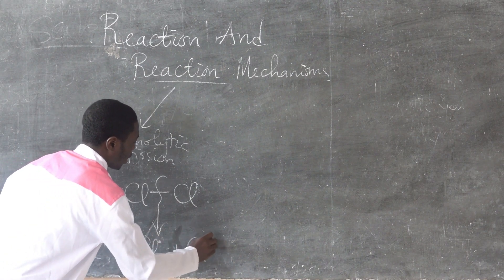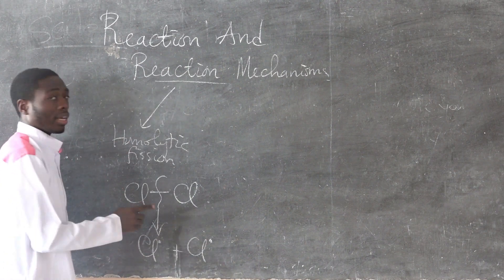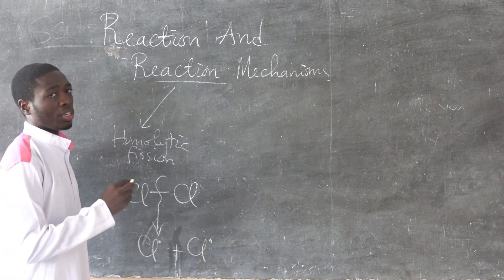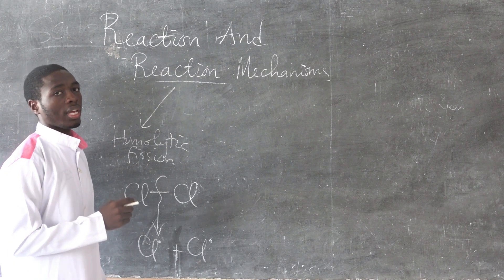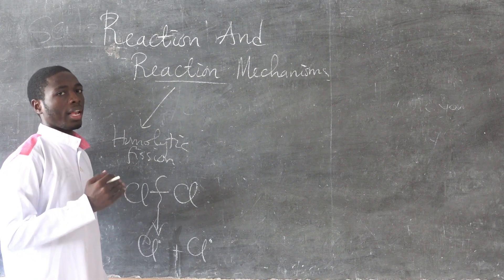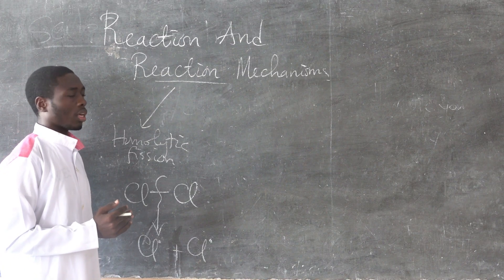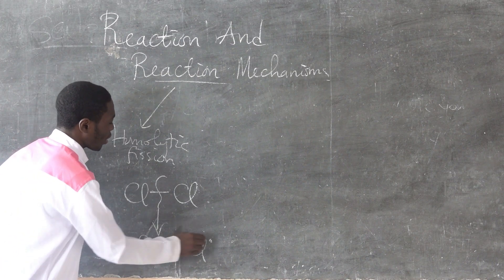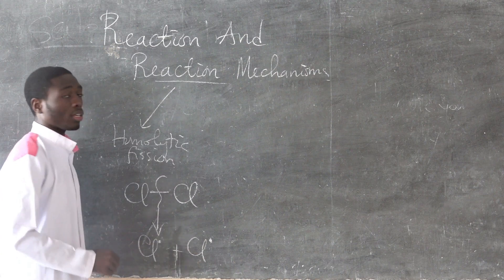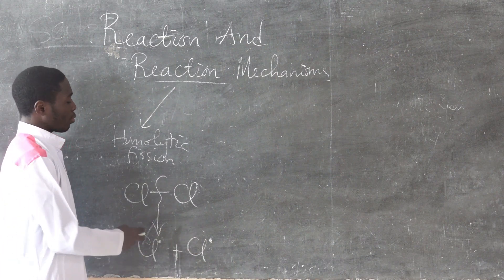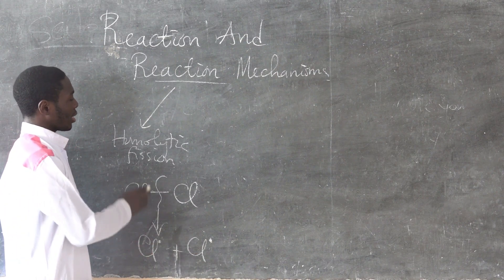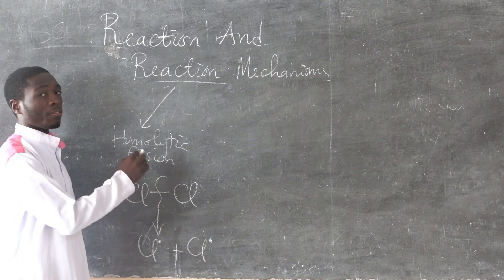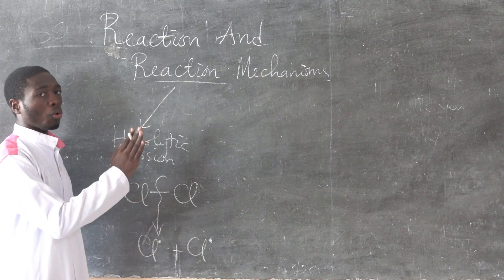Equal sharing of electrons leads to the production of radicals. Radicals are defined as species with an unpaired electron, and they are very reactive. Each atom ends up with an unpaired electron, making them radicals. That is homolytic fission — 'homo' meaning equal.